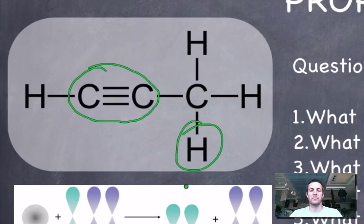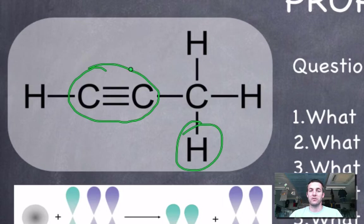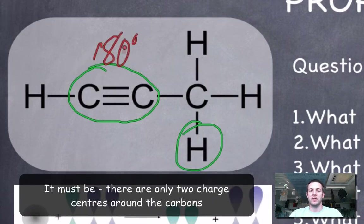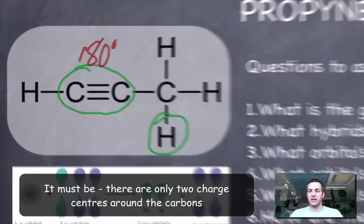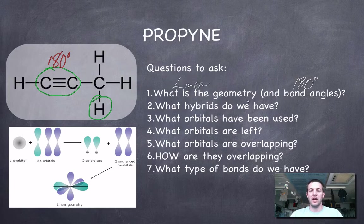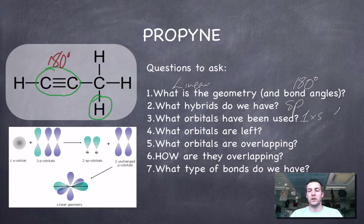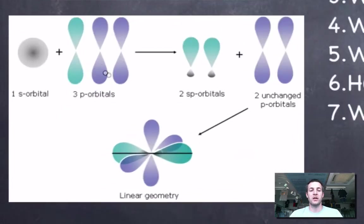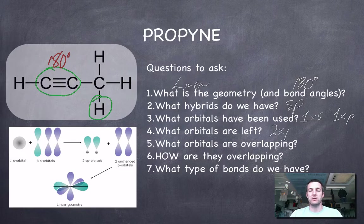Having drawn our Lewis diagram, we're looking at the 180-degree bond angle around the triple bond carbons. As soon as we see 180 degrees, we know the geometry is linear. sp hybrids give 180-degree bond angles, so what orbitals have been used? Carbon needs one s and one p to make sp hybrids. That leaves two p orbitals unused on each carbon.